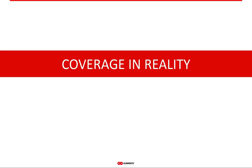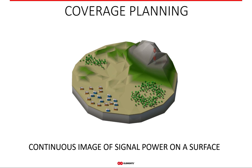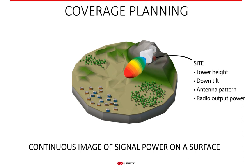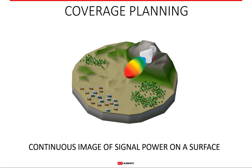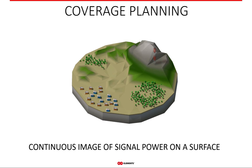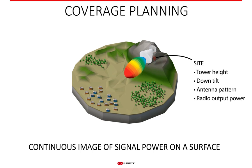Now that we know beam width is just a very crude and inaccurate measure of coverage, let's look at what coverage really is. There are many parameters that go into visualizing coverage: the site height above ground, radio output power, the antenna's specific radiation pattern and down tilt, map data with enough precision, and the orientation of the access point on that map. Knowing all these parameters, we can project the fields radiated from the antenna onto the map surface — that is what coverage really is.